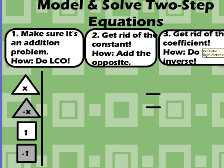Alright, so we're going to kind of review how to solve equations today. The first step that we do in solving an equation is we make sure it's an addition problem, and we do LCO to make sure it's an addition problem. The second step, we get rid of the constant by adding the opposite. And then the third step, we get rid of the coefficient by doing the inverse.